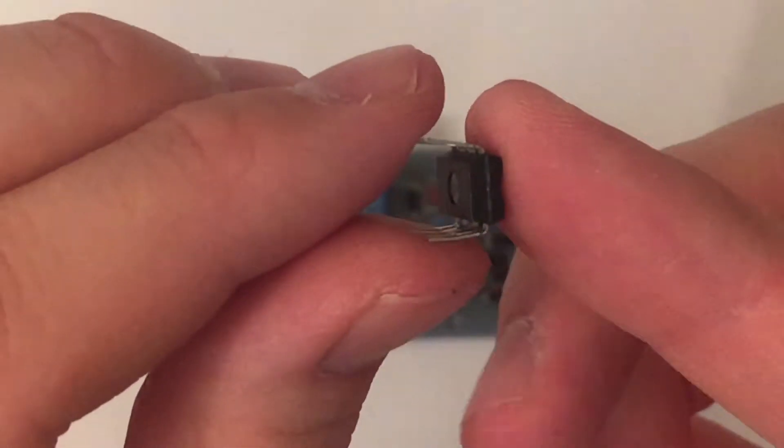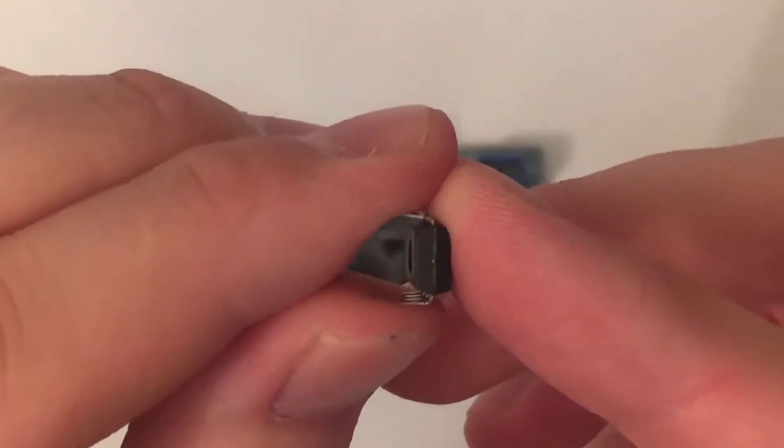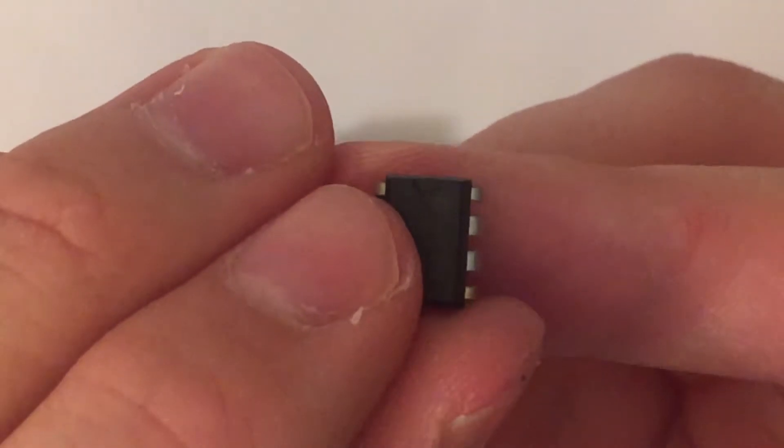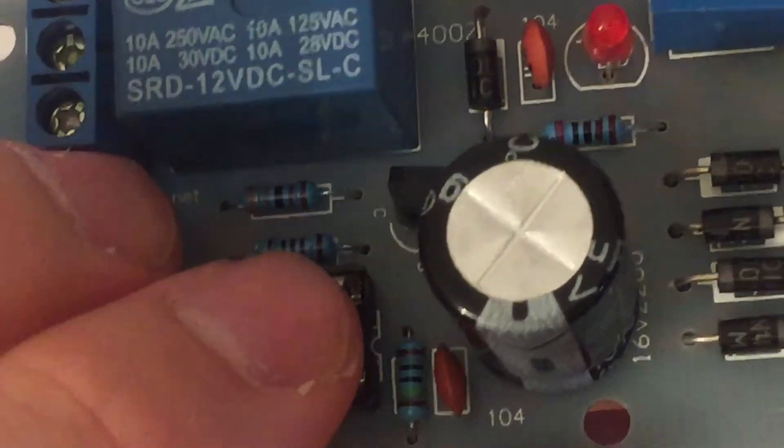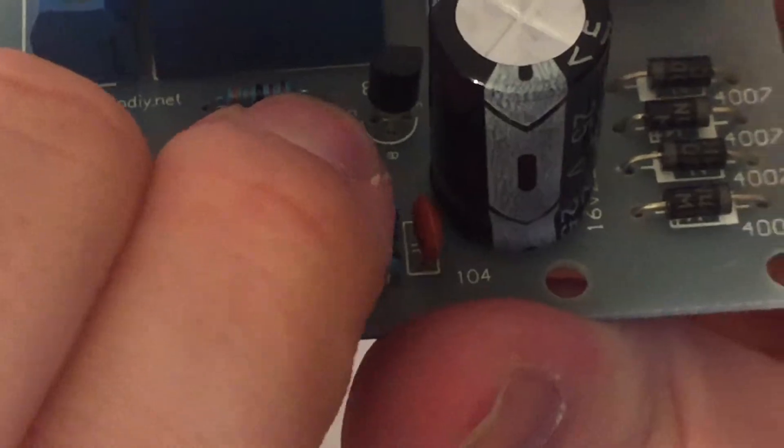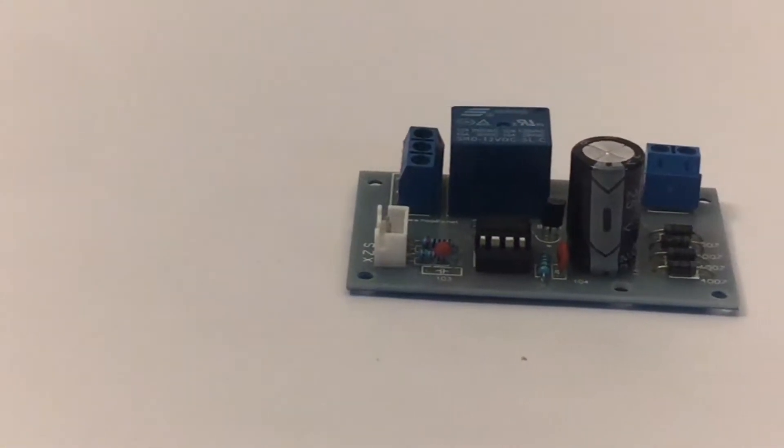Last but not least I inserted the IC. Just match up the little notch on the IC with the notch on the socket from earlier. Make sure the legs are all straight and not bent and inserted into the socket. And the kit is ready to go. Thank you for watching and have a nice day.